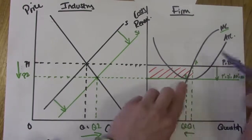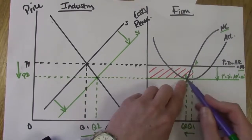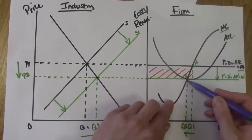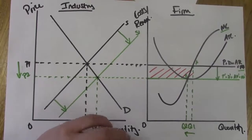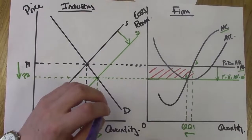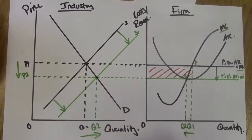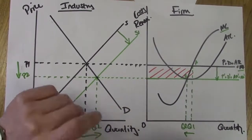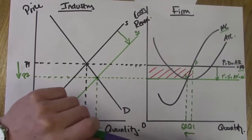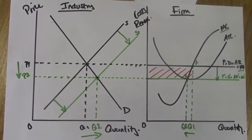The firm is no longer making a supernormal profit because all three curves - price equals demand equals AR equals MR - now equals the ATC curve. The lowest point of the ATC curve now equals the MC curve. The firm is now said to be making only a normal profit, which in a business sense would be seen as the break-even point - making neither a profit nor a loss. The firm will not leave the industry because it's still profitable to be there; they're not making a loss. The firm will only leave the industry if unable to cover their average variable costs.